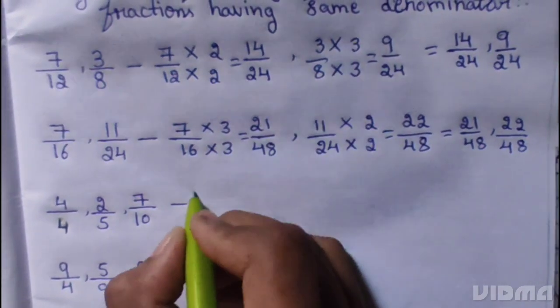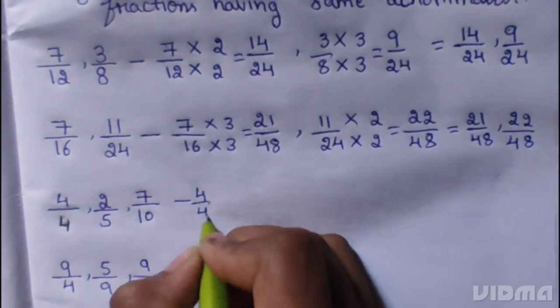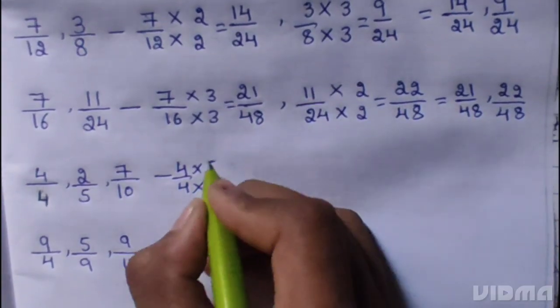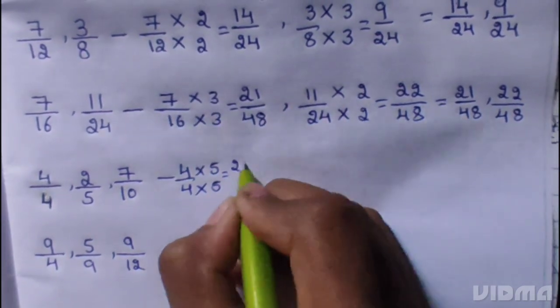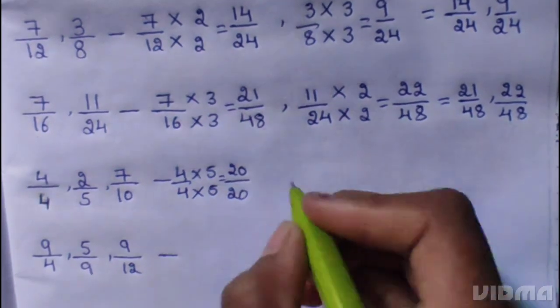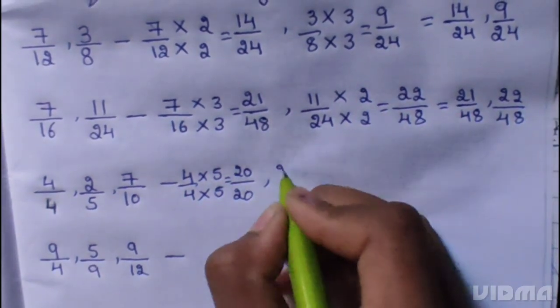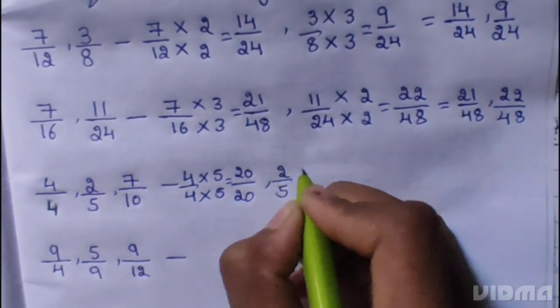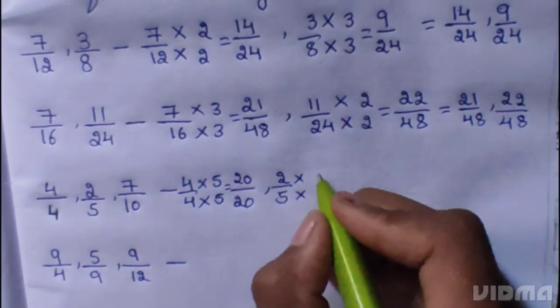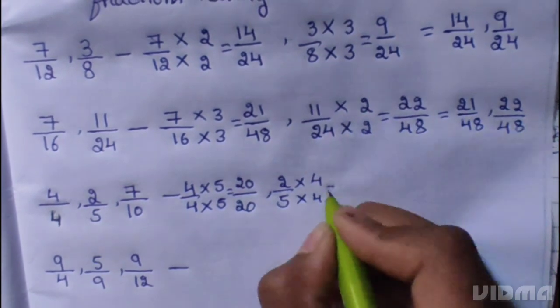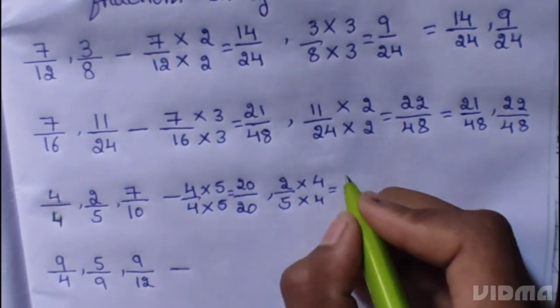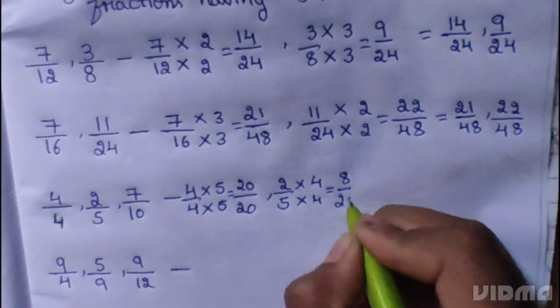4 by 4. 4 multiplied 5, 4 multiplied 5. 2 by 5, 2 multiplied 4, 5 multiplied 4, the 20.